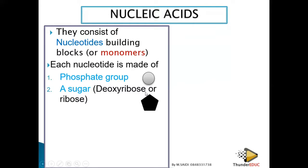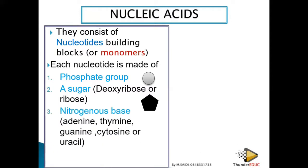The '-ose' ending indicates a sugar, like glucose, maltose, or ribose. This pentose sugar is either deoxyribose or ribose. In the exam, if asked to name the sugar — for DNA, say deoxyribose; for RNA, say ribose. Don't just call it a pentose.